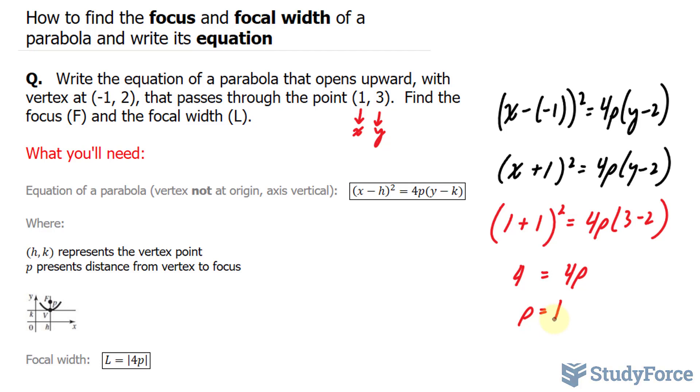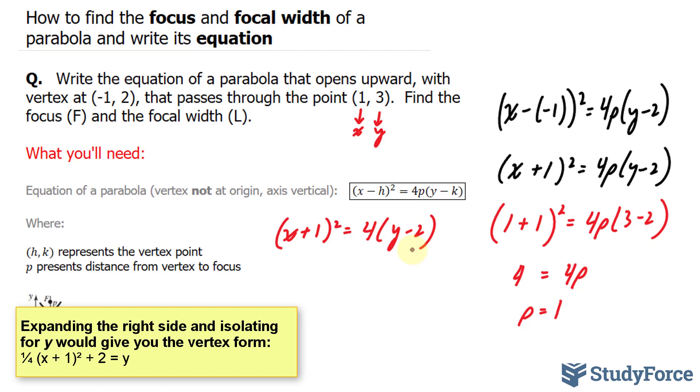I found my p value, and now I can use this to substitute it back into the original equation that we built. We end up with (x + 1)² = 4(y - 2). We found our equation.